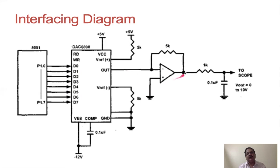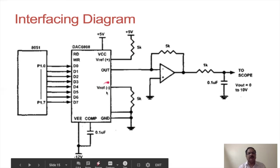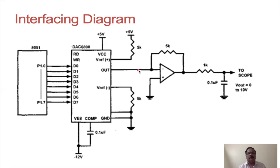At the output of the DAC you will find an operational amplifier used as a current-to-voltage converter, giving you the equivalent output voltage. The V_reference positive is connected through a 5K resistor to 5V, and V_reference negative is connected to ground. Whatever digital input is applied, the DAC converts it to analog current form, which is then converted to voltage using the op-amp as a current-to-voltage converter.